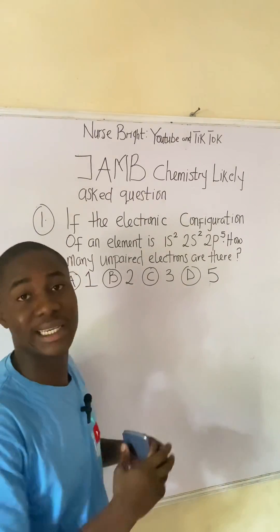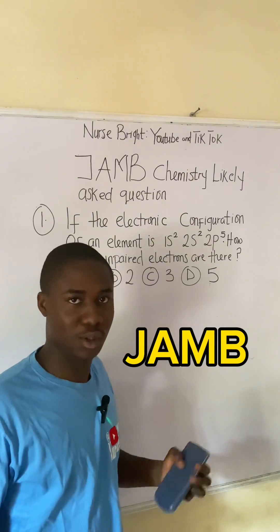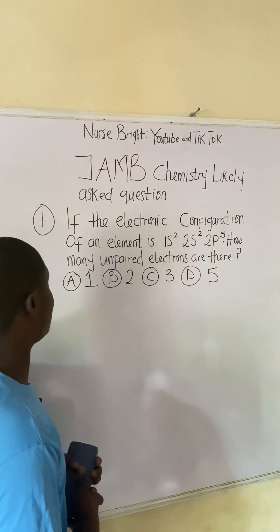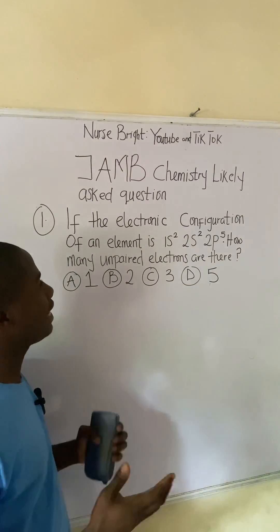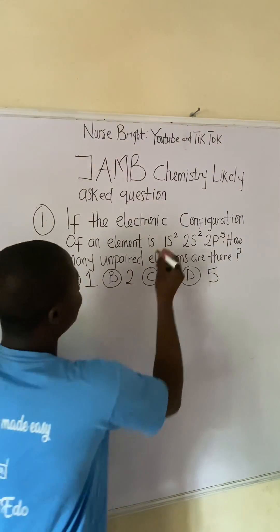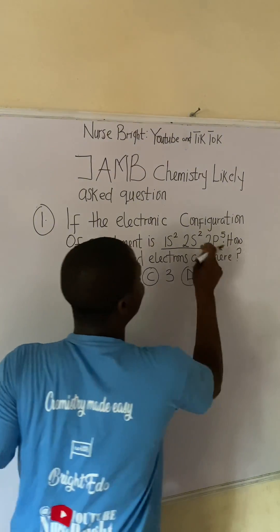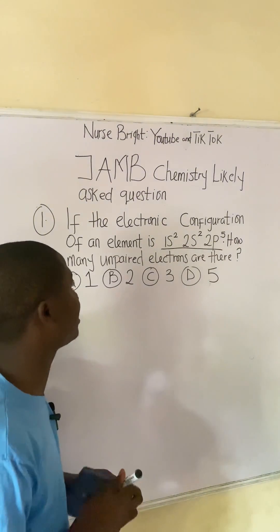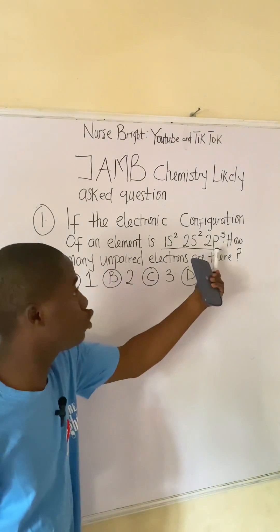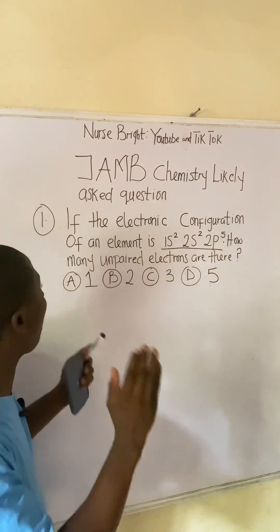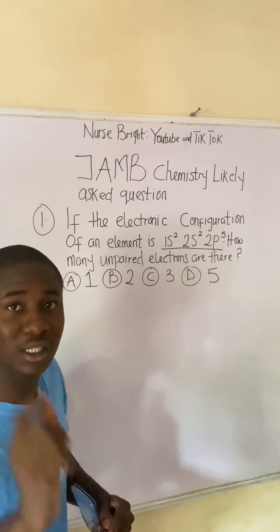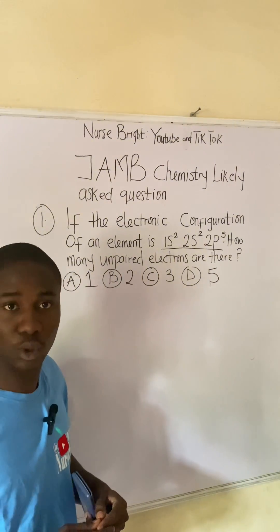If you came across this question in the JAM exam, how will you solve it? It is very easy. The question says: if the electronic configuration of an element is 1s² 2s² 2p⁵, how many unpaired electrons are there? This question is very easy — just watch closely, you can actually solve this.